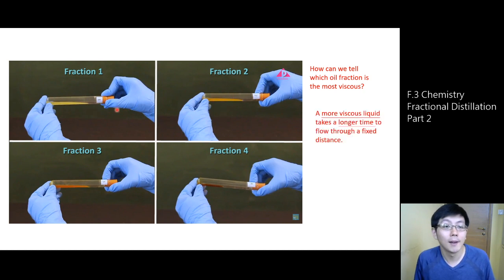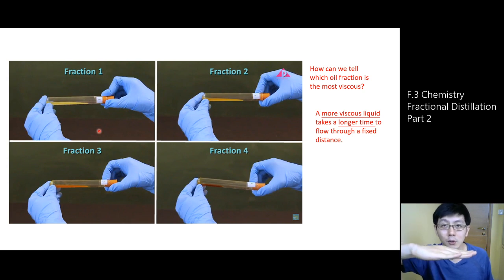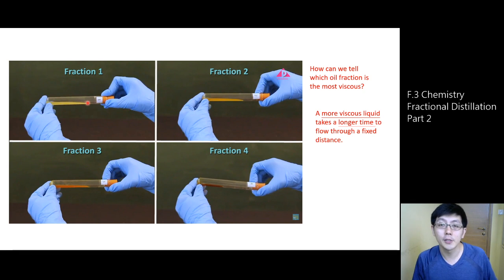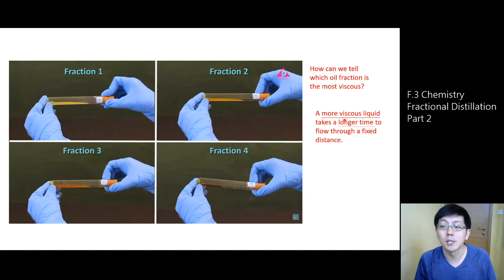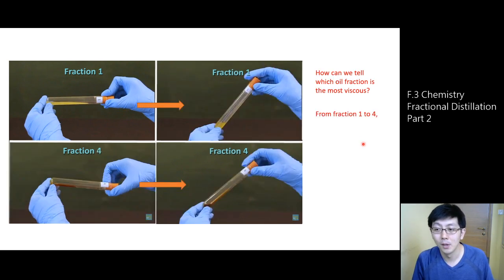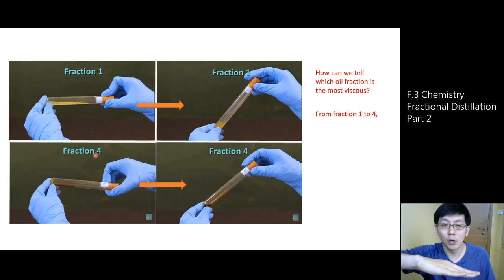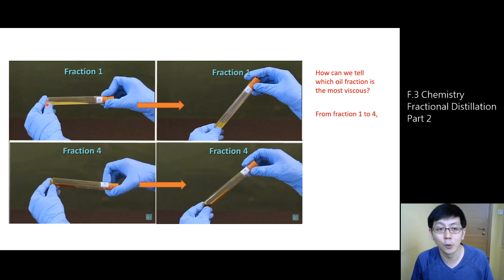We compare the time for the liquid to flow a fixed distance. When the test tube is placed horizontally, the liquid flows from one end to the other. You may use a stopwatch or just observe the time for the liquid to flow a fixed distance — say from the bottom of the test tube to the mouth. If the liquid is more viscous, it will obviously take a longer time to flow through a fixed distance. Here I extract two experimental results: fraction 1 and fraction 4.